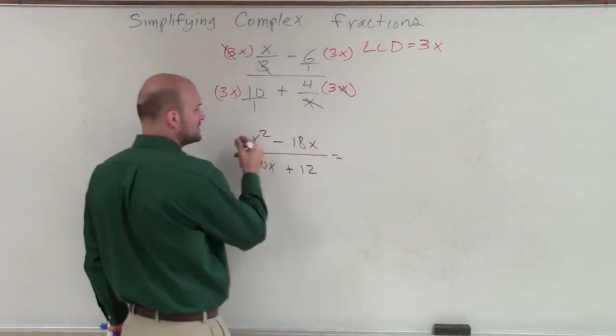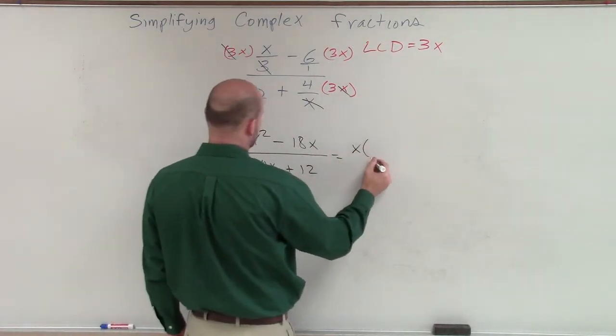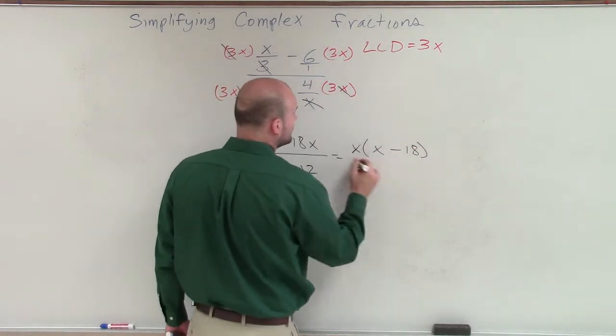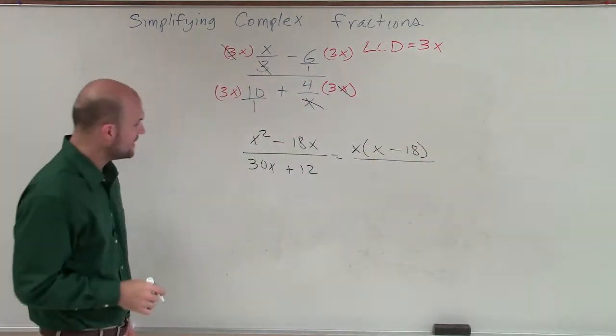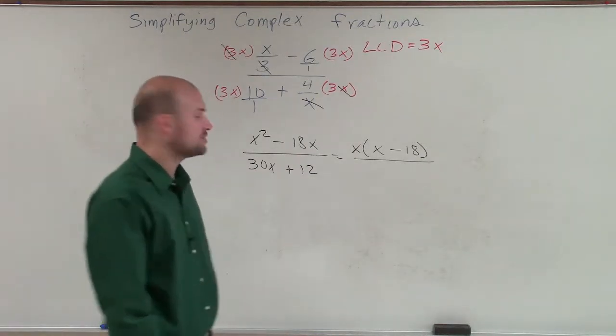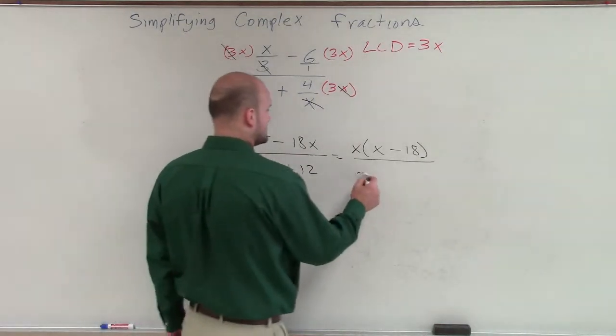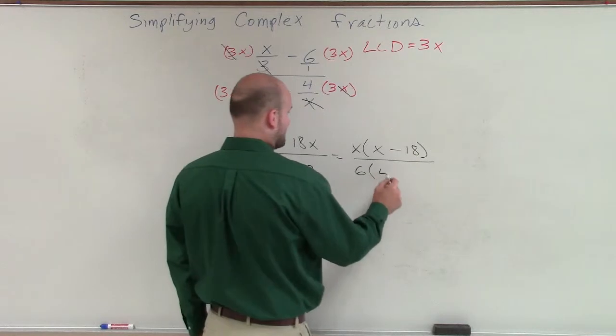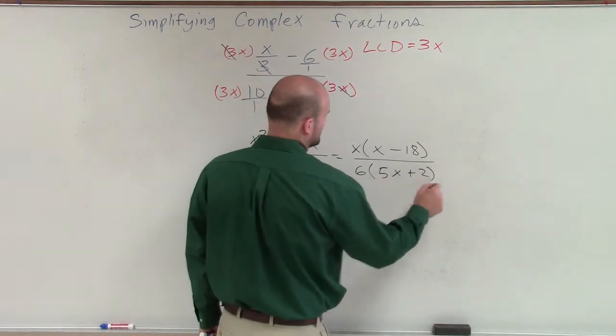Well, we can factor out an x in our numerator. So if I factor out an x, I'm left with x minus 18. And then in my denominator, I can see that they share a common term of 6. So if I factor out a 6, I'll be left with 5x plus 2.